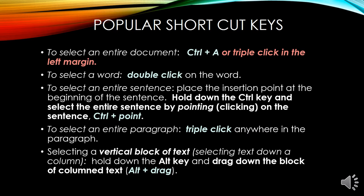To select an entire paragraph, triple click anywhere in the paragraph. For selecting a vertical block of text — which you learned in chapter 1 — hold down the Alt key and drag with the mouse down the column text.